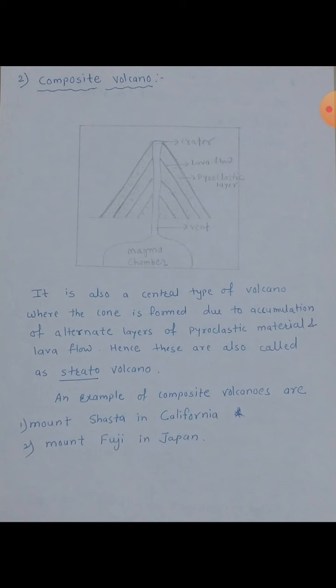Hence these are also known as strato volcanoes — hela strato volcano suddha manthat. Strata means layer — layers asthat hachya madhe: pyroclastic layer asthe, lava flow asthe, parat pyroclastic material asthe, lava layer asthe. So alternate layers of both asthat — pyroclastic material aani lava flow — so it is also known as strato volcano. An example of composite volcanoes are Mount Shasta in California, aani dusra example ahe Mount Fuji in Japan.